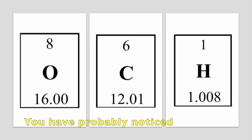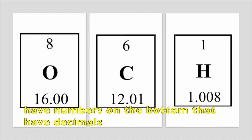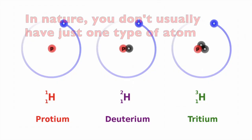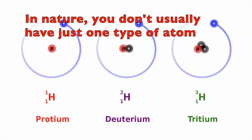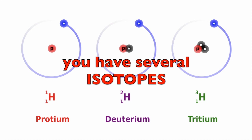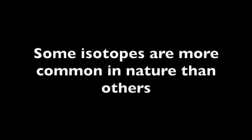You have probably noticed that the boxes in a periodic table have numbers on the bottom that have decimals rather than nice even numbers, and that's because these numbers represent average atomic masses. In nature you don't usually just have one type of atom — you have several isotopes. Remember, isotopes are atoms of the same element with different numbers of neutrons. Some isotopes are more common in nature than others.